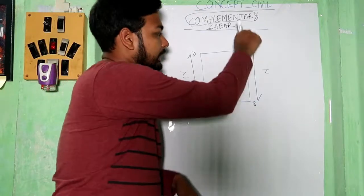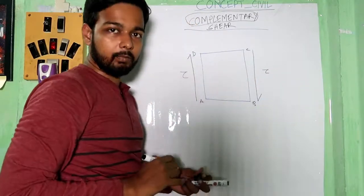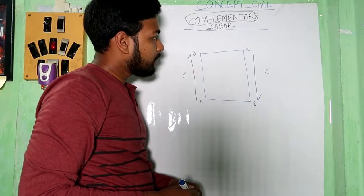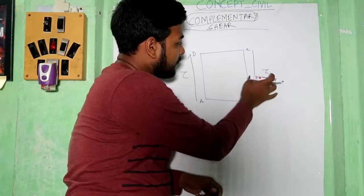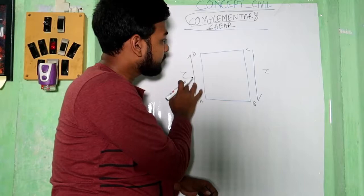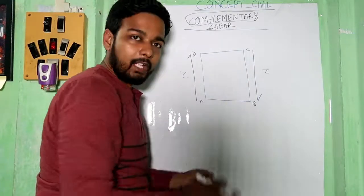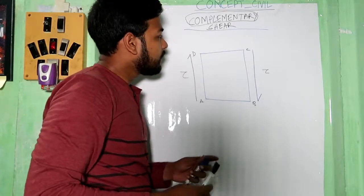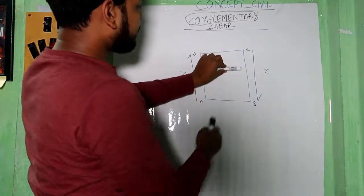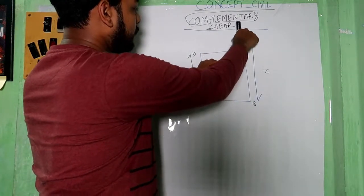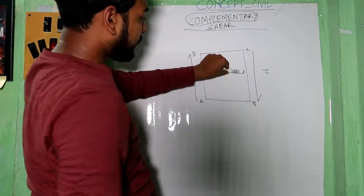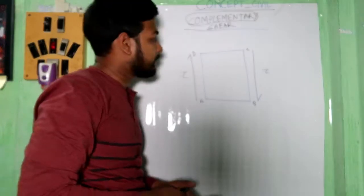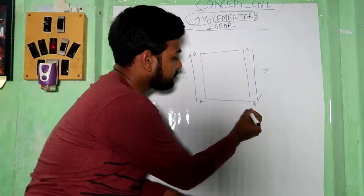Assume that downward is positive and upward is negative. The line of action of this force and that force is different. So what will happen there? What will be happening?